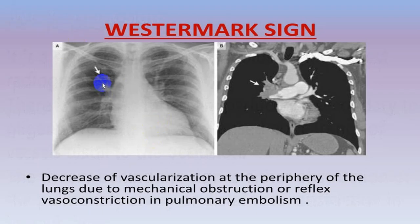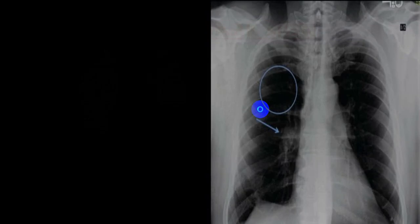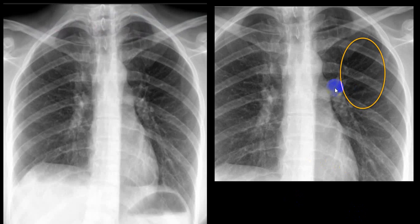Westermark sign: close to the hilum there will be an area of radiolucency — a decreased vascularization at the periphery of the lung due to mechanical obstruction or reflex vasoconstriction in pulmonary embolism. This can be better appreciated on CT or MRI. You can see that after a certain area, vascular markings are absent — this is the Westermark sign. The diaphragm is pulled up secondary to pulmonary infarct.